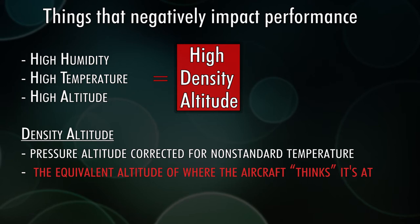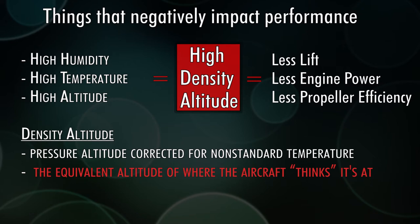In other words, when you have a high density altitude, the air is thin, so you have less lift, your engine produces less power, and your propeller produces less thrust. And so all those things combined, you have a high density altitude. The airplane thinks it's super high when in reality it really isn't. It feels like that because the air is a lot thinner due to all those factors.